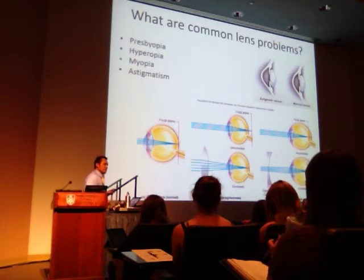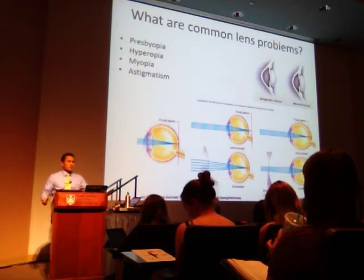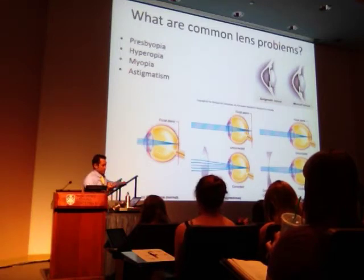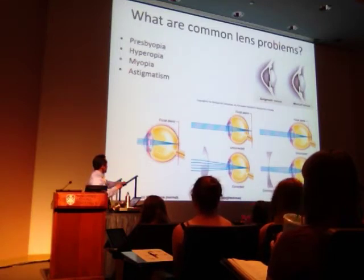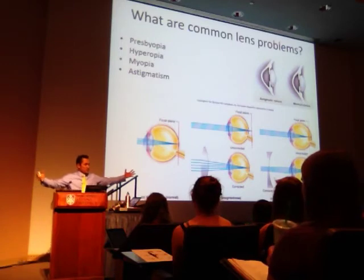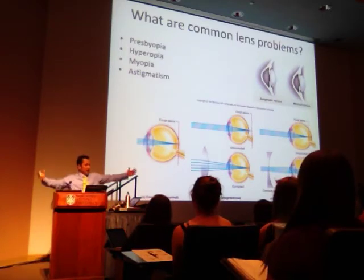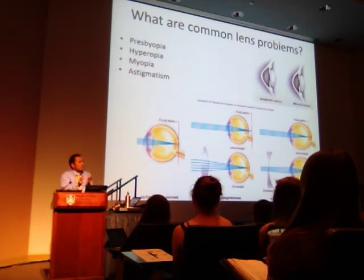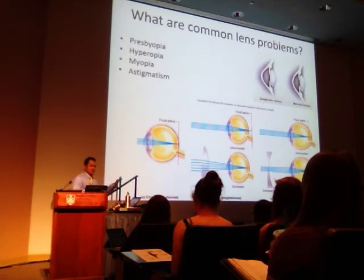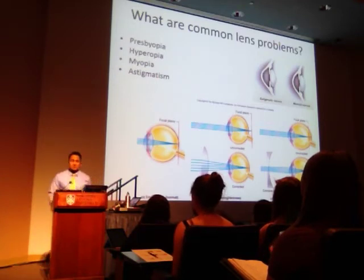LASIK procedures alter the shape of the lens or the cornea to improve accommodation. After LASIK, the lens has a greater ability to accommodate because its shape has been altered to fatten or thin more. However, they're not guaranteed for your whole life — as your lens continues to change with age, you may need glasses or contacts again later.